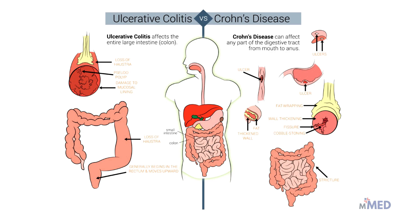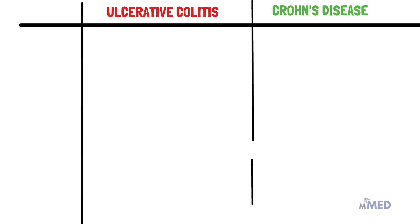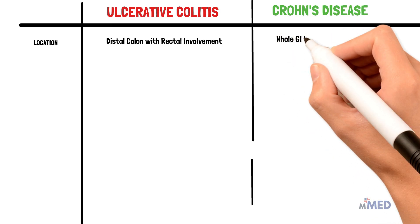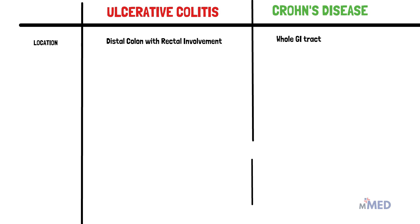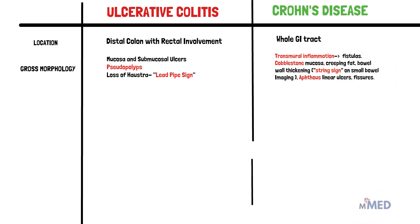In recap: ulcerative colitis is located in the distal colon with rectal involvement, while Crohn's disease involves the whole GI tract. In UC, gross morphology shows mucosal and submucosal ulcers with pseudopolyps and loss of haustra leading to the lead pipe appearance. In Crohn's disease, transmural inflammation involves all layers, leading to fistulas, cobblestone mucosa, bowel wall thickening, and the string sign due to strictures, as well as aphthous ulcers and fissures.